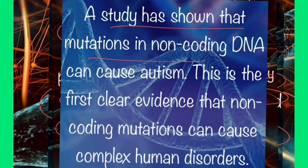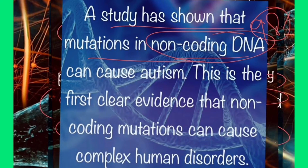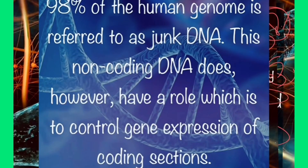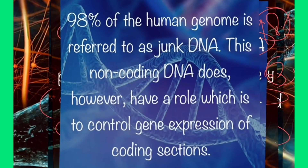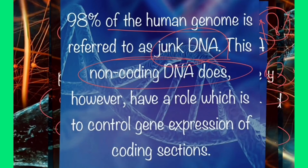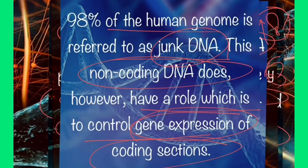The next study is about mutations. In our body, 98% of the genome is non-coding, and only 2% is coding. This non-coding 98% is what we call junk DNA — meaning it was thought to be waste DNA. But this is not waste; it plays a role in controlling gene expression in the coding sections.